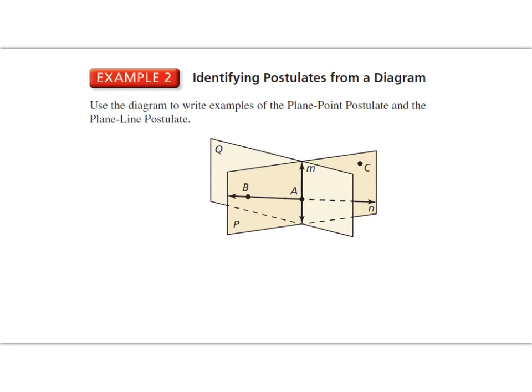All right, let's take a look at identifying postulates from a diagram. So use this diagram to write examples of the plane point postulate and the plane line postulate. All right, so I see plane P, and it contains at least three non-collinear points